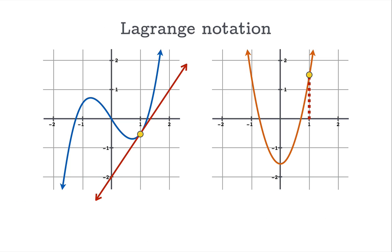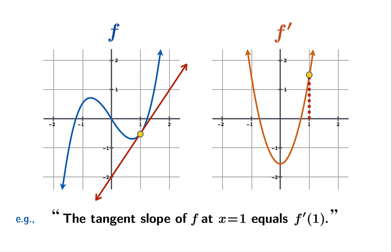The first notation we'll look at is called Lagrange notation, after the Italian mathematician Joseph Louis Lagrange. We'll assume that our function has a name f, then the derivative would be called f prime. How might we use this notation? We might say the tangent slope of f at x equals 1 equals f prime of 1. f prime is the name of the derivative function, so we can just plug the argument 1 in and we get f prime of 1 as the value, which would be the tangent slope of the original function.